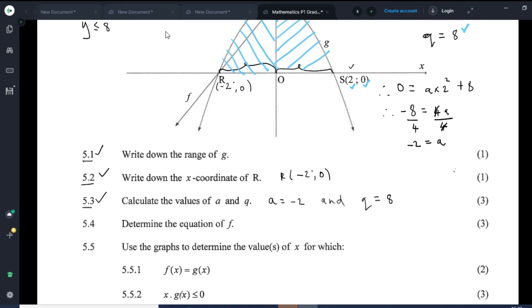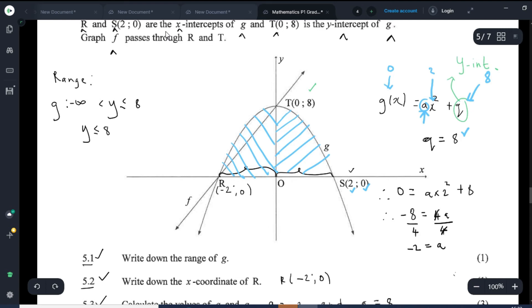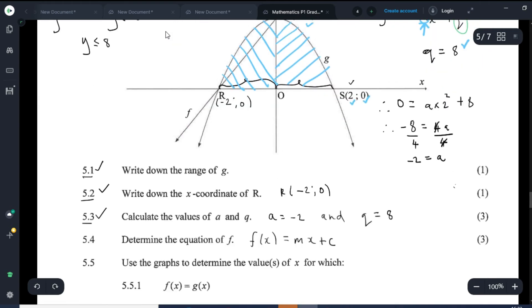So let's look at 5.4. Determine the equation of F and F is a linear equation. It's a straight line. So the general form of the equation is F of X equals MX plus C. So to find the gradient M, we need two points. And fortunately, we do have the two points. And those two points happen to be the intercepts. So we can find the gradient. And we also have the y-intercept. So that's quite easy. C is the y-intercept. Always remember in the general form, F of X equals MX plus C. C is always the y-intercept.